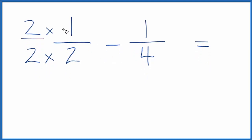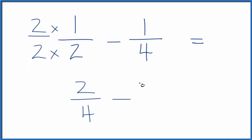Just now, two times one is two. Two times two is four. And two over four minus one over four. Now I have that denominator that's the same for both of these.